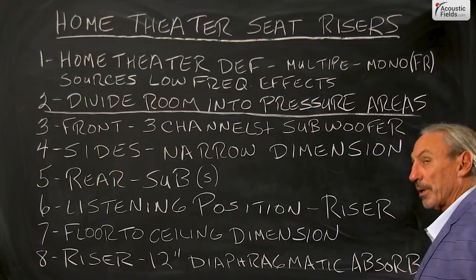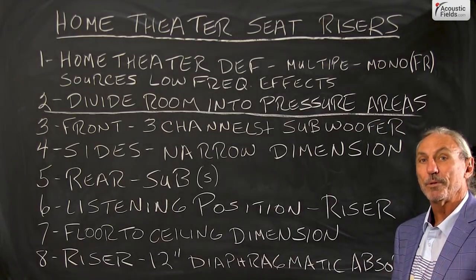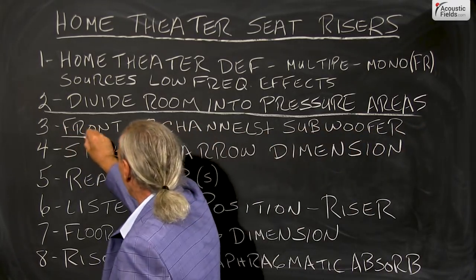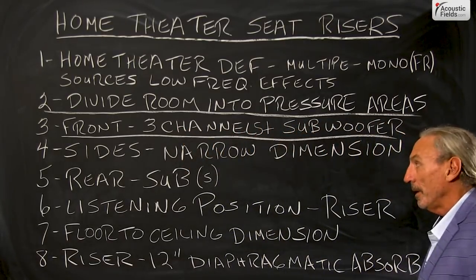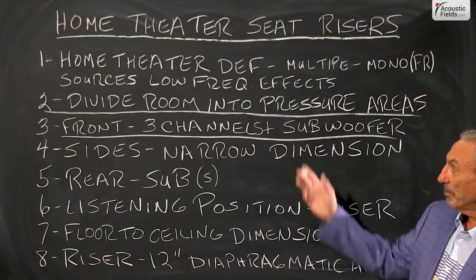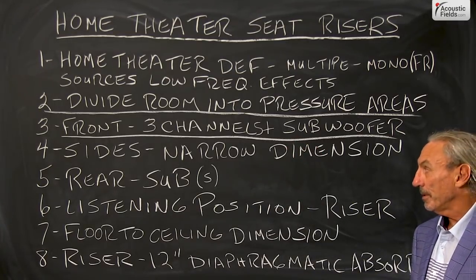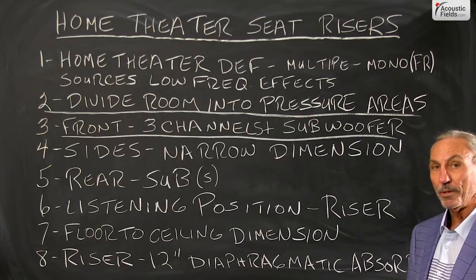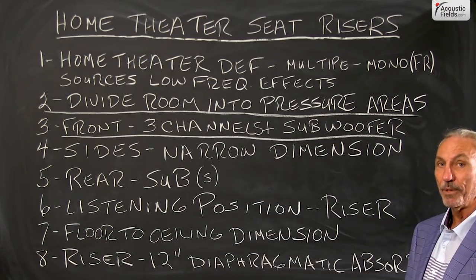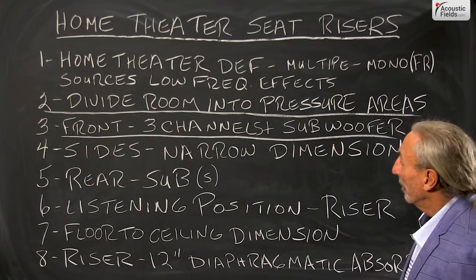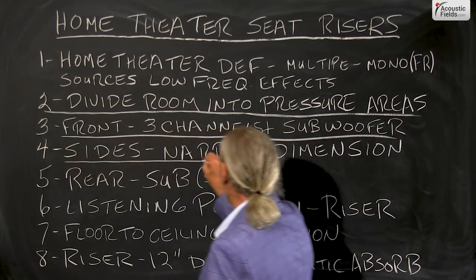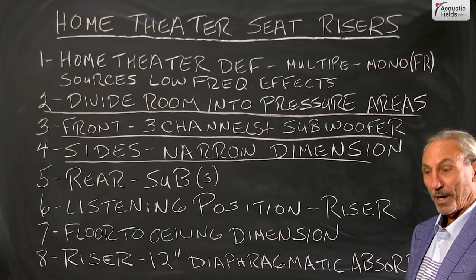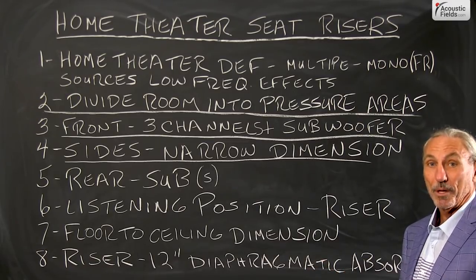We want to divide the room up into pressure areas and look at those areas causing the most pressure, then treat accordingly. The front is almost always an area of high pressure in any audio room — that's where the sources are located. In home theater we have center channel, left channel, right channel. We're not a big proponent of the center channel; we'll do a video on that someday showing how to get rid of it and achieve a much better sound field. The sides of the room, next to the ceiling and floor dimension, are usually one of the narrowest dimensions — and narrow is bad when we're trying to fill our room with water, so to speak.